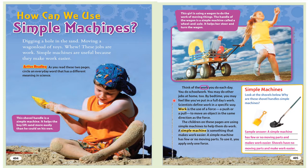By bedtime, you may feel like you've put in a full day's work. Scientists define work in a specific way. Work is the use of a force, a push or a pull, to move an object in the same direction as the force. The children on these pages are using simple machines to help them do work. A simple machine is something that makes work easier. A simple machine has few or no moving parts. To use it, you apply only one force.